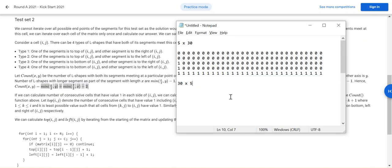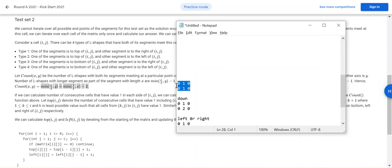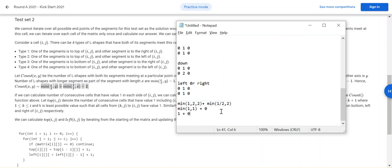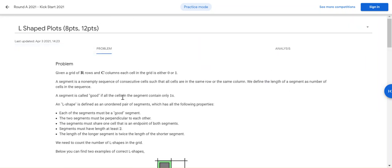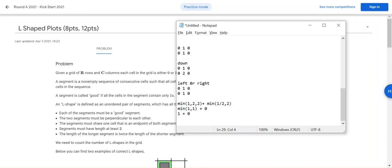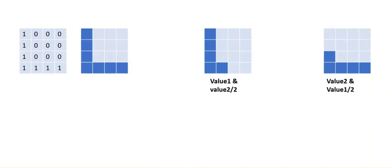The other value should always be divided by two. Also, for the minimum case — consider a two-by-three matrix. If you apply down and left or right, you might get one as output, which is wrong, because a segment must have length two or more. To handle this, we subtract one from the result. So the full formula becomes: minimum(value1, value2 // 2) + minimum(value2, value1 // 2) - 1, to avoid counting invalid one-by-two cases.